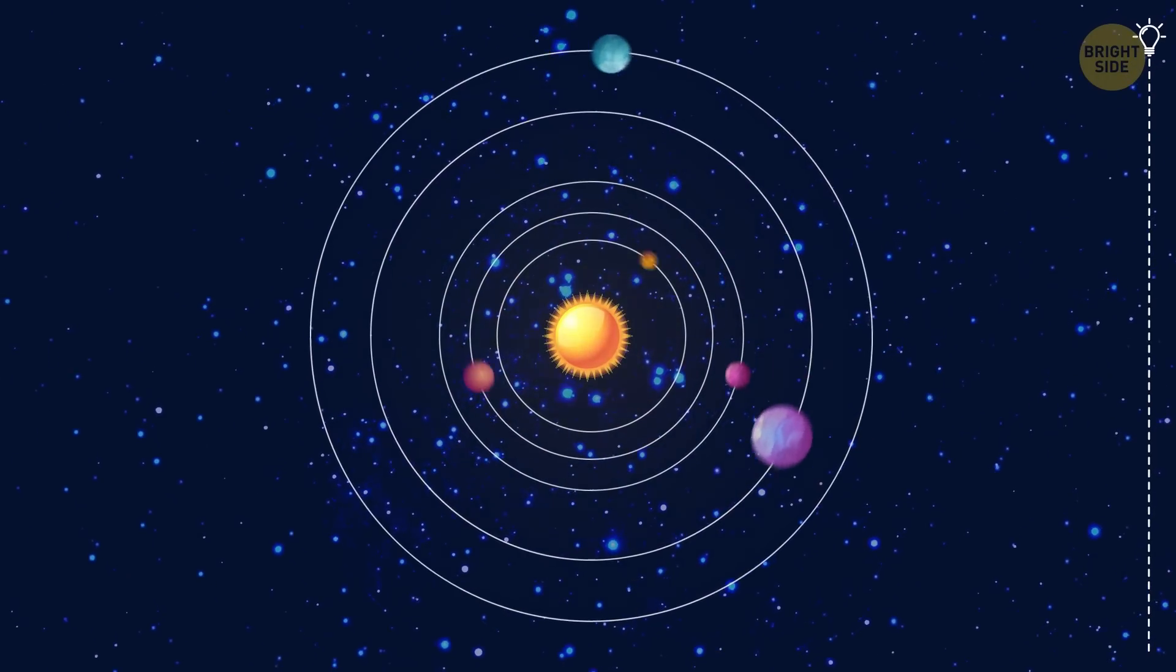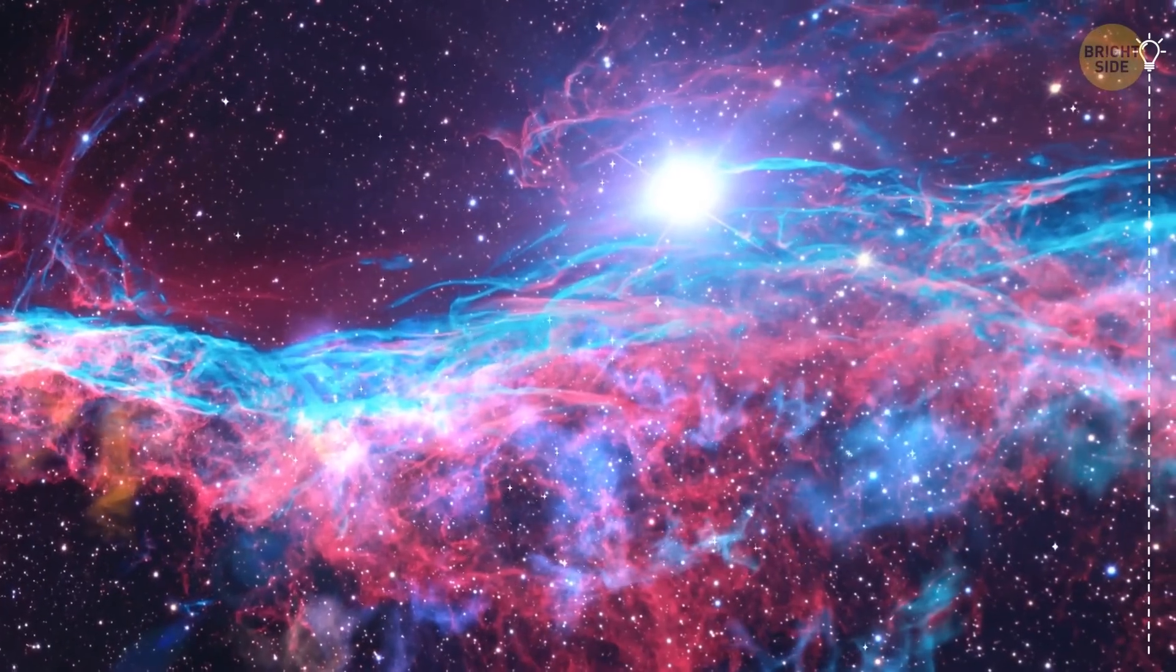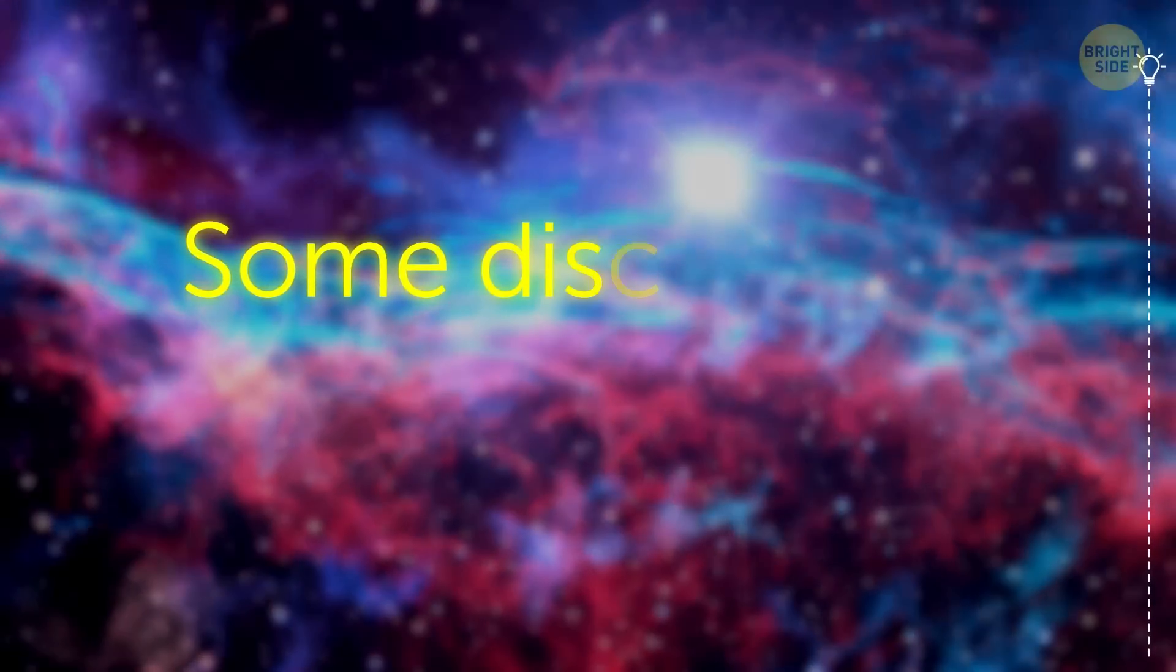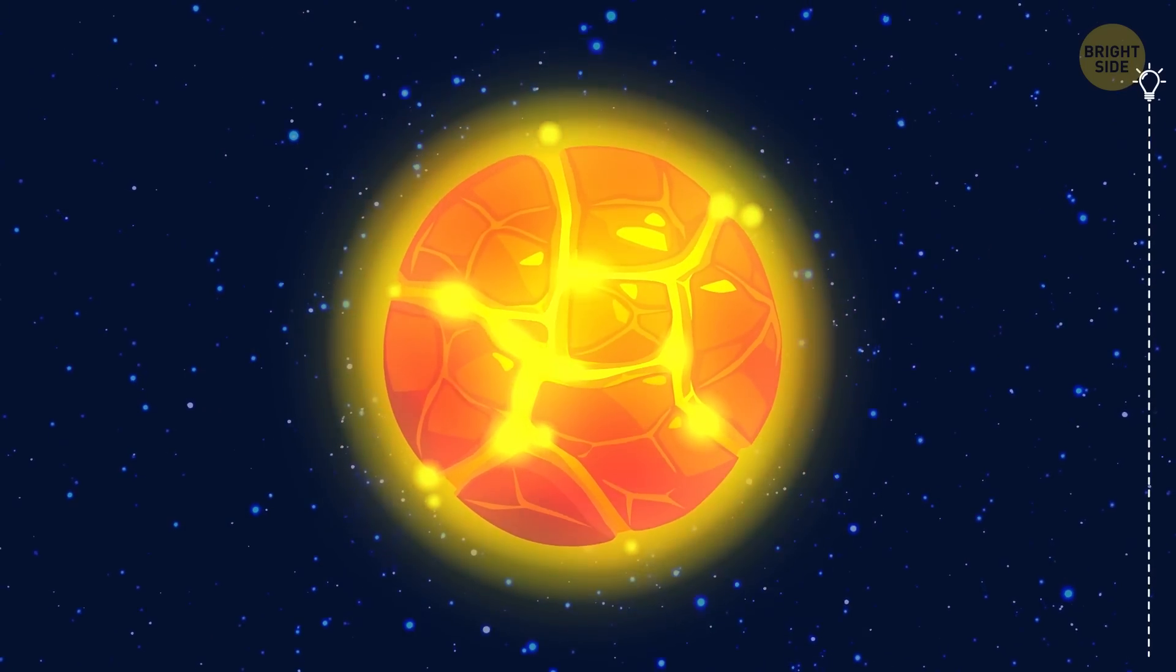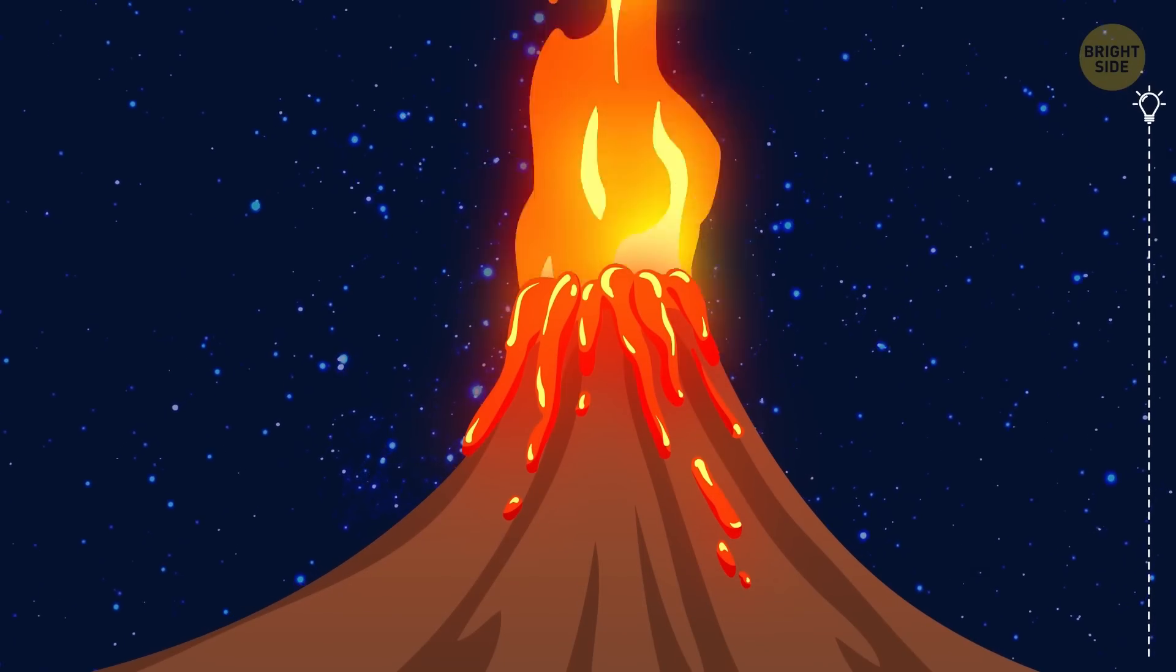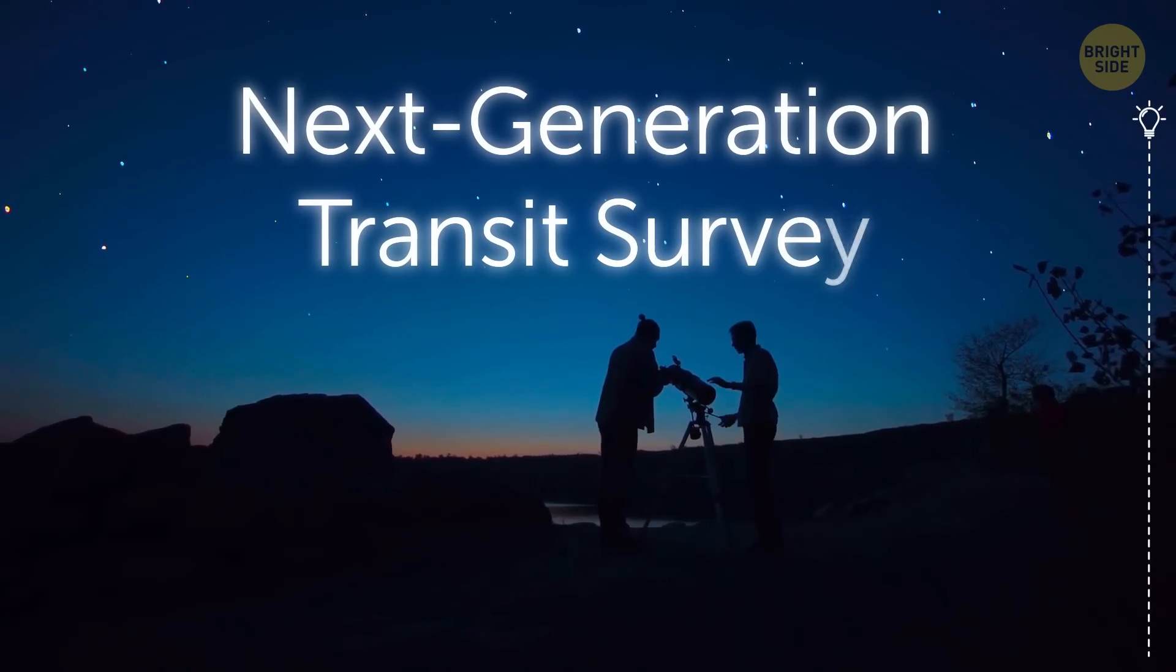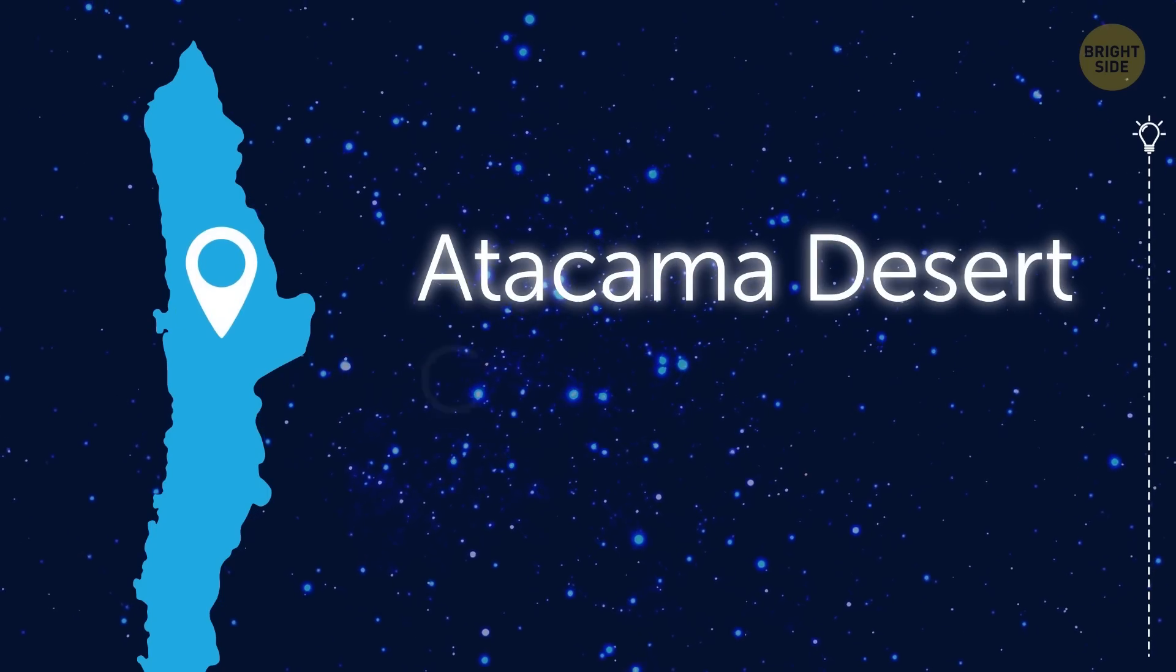Exoplanets are the hottest topic in astronomy right now. And with every new discovery, we're getting more and more confident in our view of the universe we live in. But some of those discoveries simply baffle the mind. The planet I'm talking about is called NGTS-4b. Well, I like Vulcan better, but they didn't ask me. That planet was found by the Next Generation Transit Survey, or NGTS, located in the Atacama Desert, Chile.